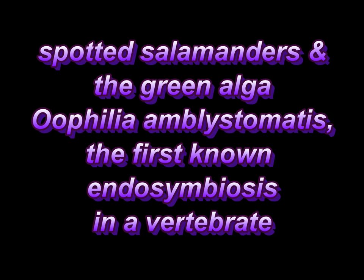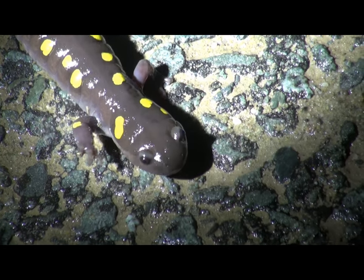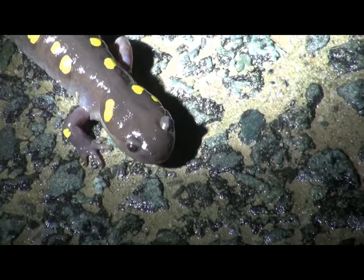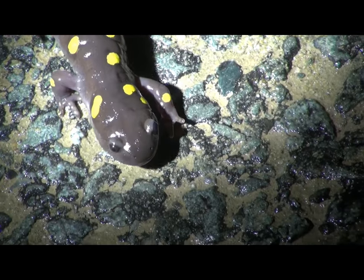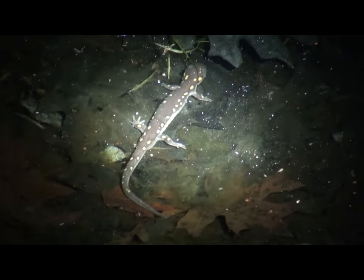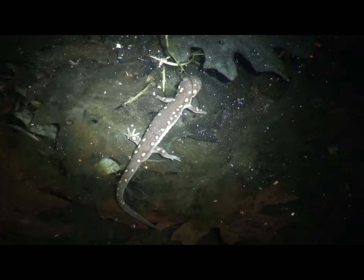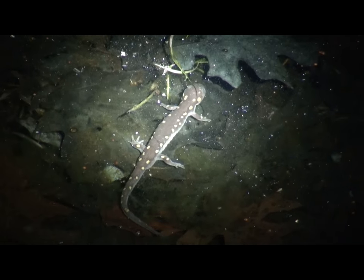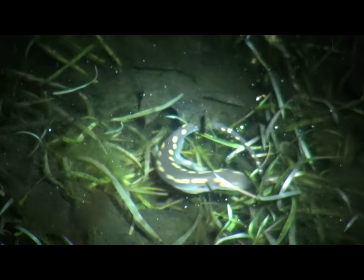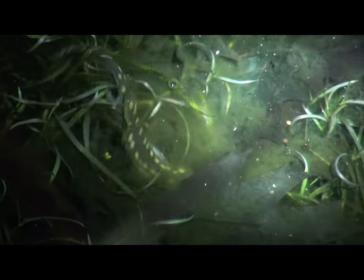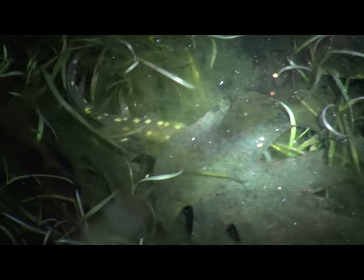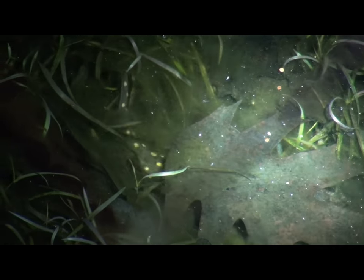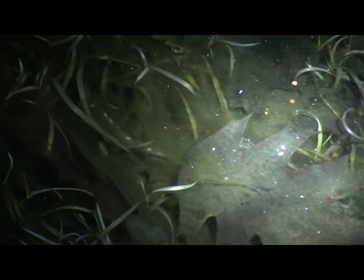In early spring, spotted salamanders leave their sites of hibernation and make their way to vernal pools. Those pools formed in early spring with the help of snowmelt, and here they mate and lay their eggs.